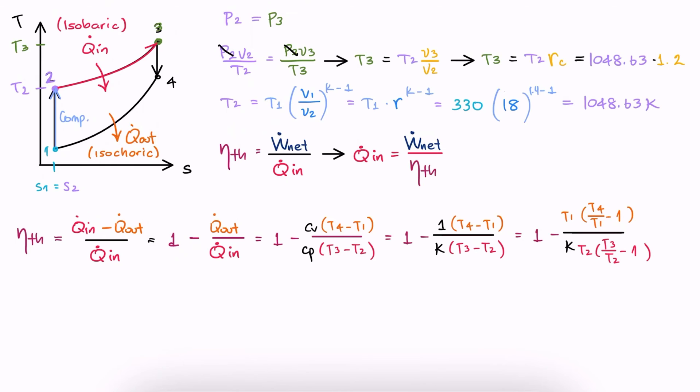And the reason for this is that we have expressions for the temperature ratios. Let's look at each one of the three temperature ratios. From 3 to 2, we have the same ideal gas equation we used before, so T3 over T2 is the cutoff ratio. And from 1 to 2, we have isentropic compression, which we already developed an expression for.